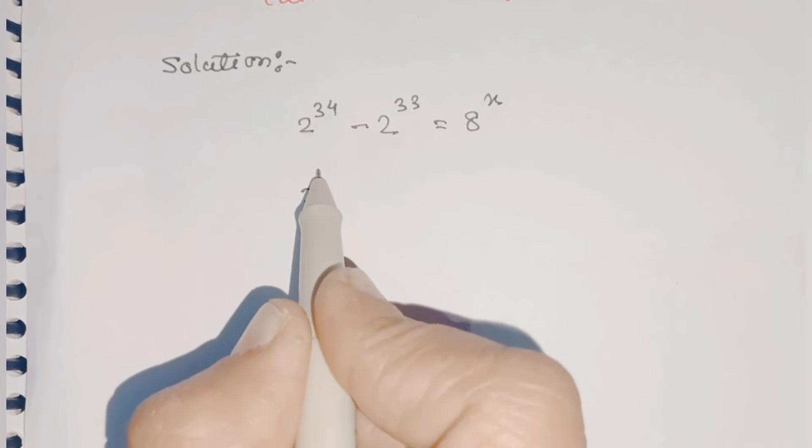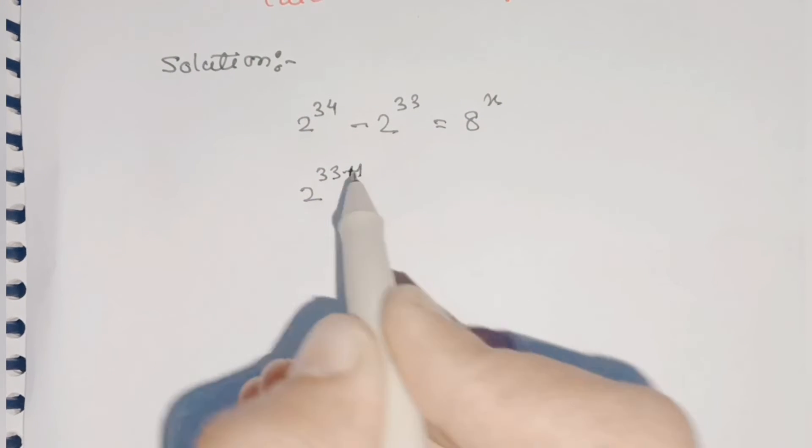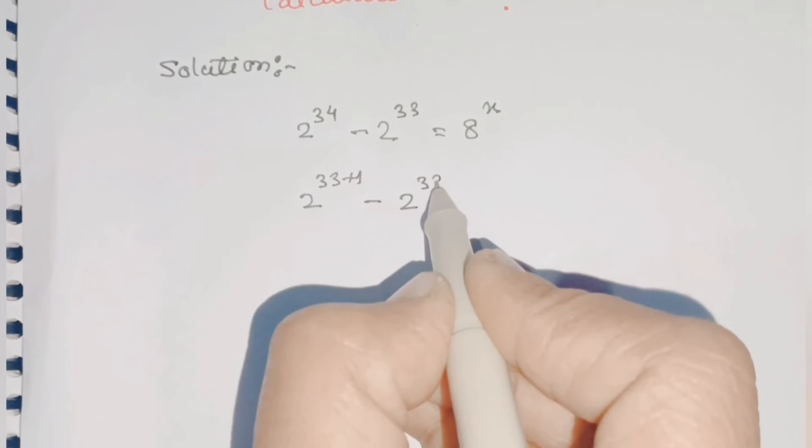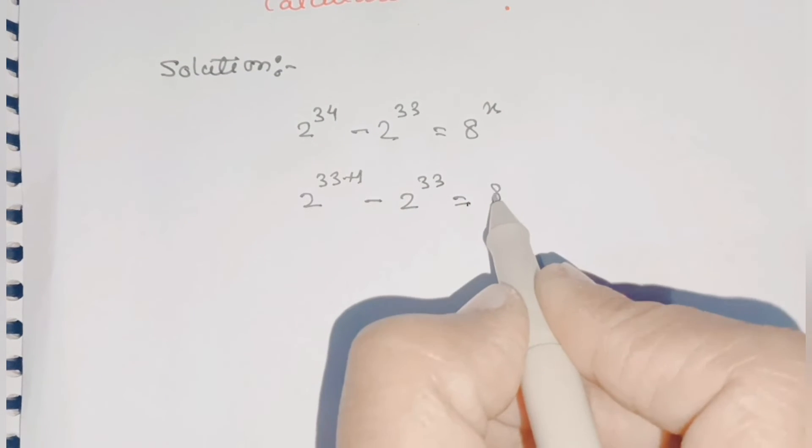We can split 34 as 33 plus 1, so we'll write 2 raised to 33 plus 1 minus 2 raised to 33 is equal to 8 raised to x.